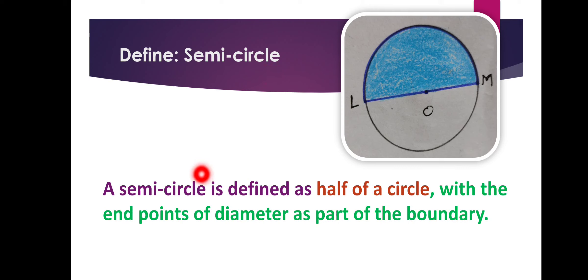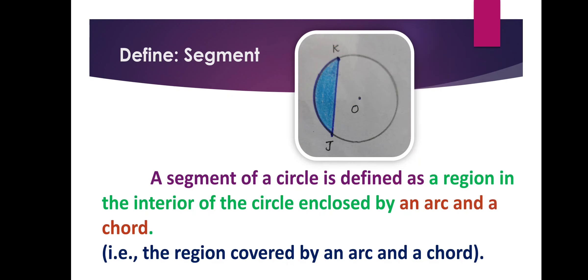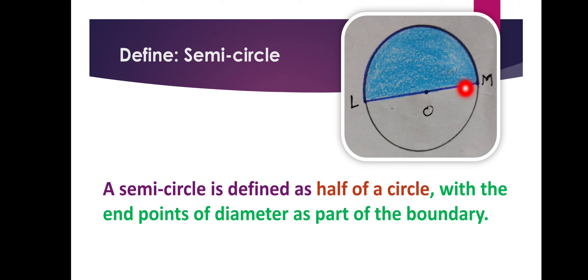Define semi-circle. A semi-circle is defined as half of a circle — semi means half. Half of a circle with the end points of a diameter as part of the boundary. We have two semi-circles here: one is above diameter LM, including the diameter LM, and another one is below LM — the lower portion. Both are semi-circles. This colored region is a semi-circle and the portion left uncolored is also a semi-circle — half of the circle.